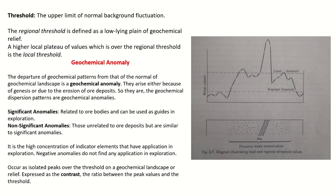Negative anomalies — where the concentration of an element in earth material is less than the background or normal value — do not find application in exploration. They may have application in environmental sciences, but in exploration it is the excess, or positive anomalies, that find application. In a geochemical landscape, we have a low-lying plain which is the regional threshold, a plateau which is the local threshold, and some peaks that rise above the local plateau or even above the plain.